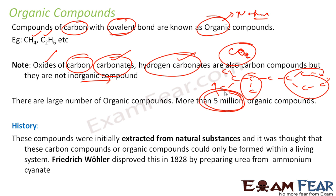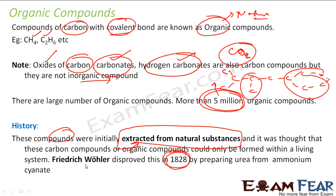Let me tell you why it is called organic — there is a history behind this. Earlier, it was assumed that these compounds were extracted from natural substances, and it was thought that all organic compounds are natural. Only in 1828, Fritz Wöhler disproved this by preparing urea, an organic compound, from ammonium cyanate in the lab. So this scientist created an organic compound in the lab itself.